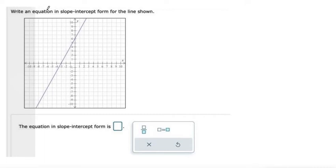This problem says write an equation in slope-intercept form for the line shown. So first of all, what is slope-intercept form?